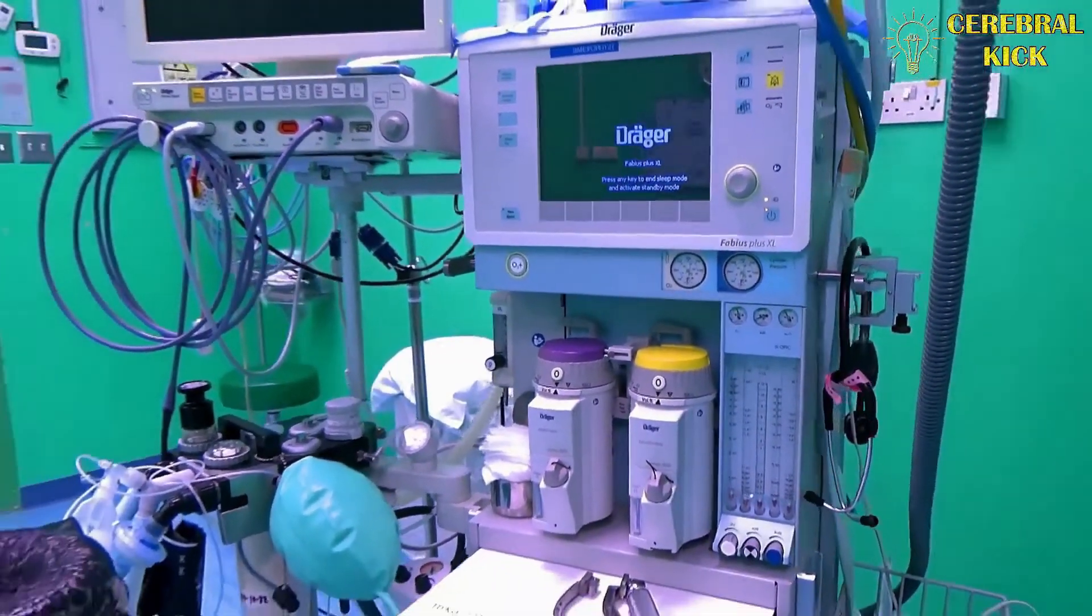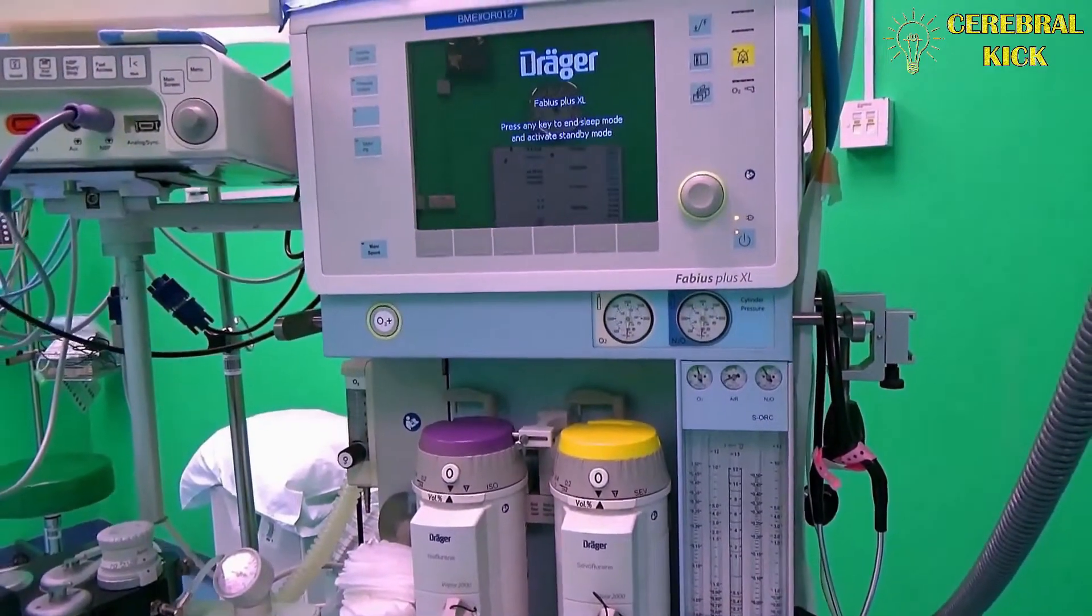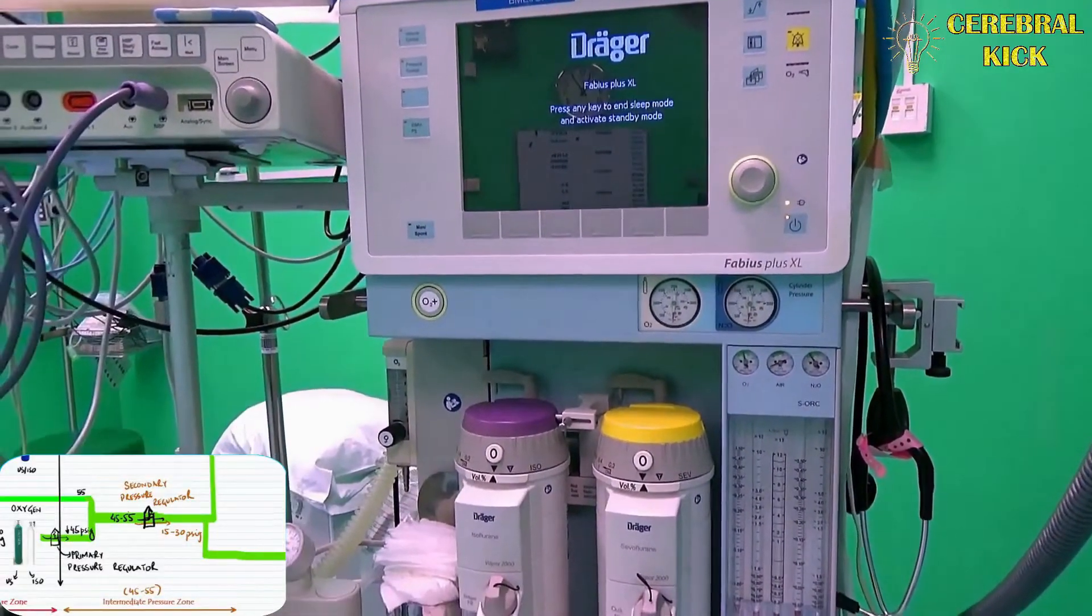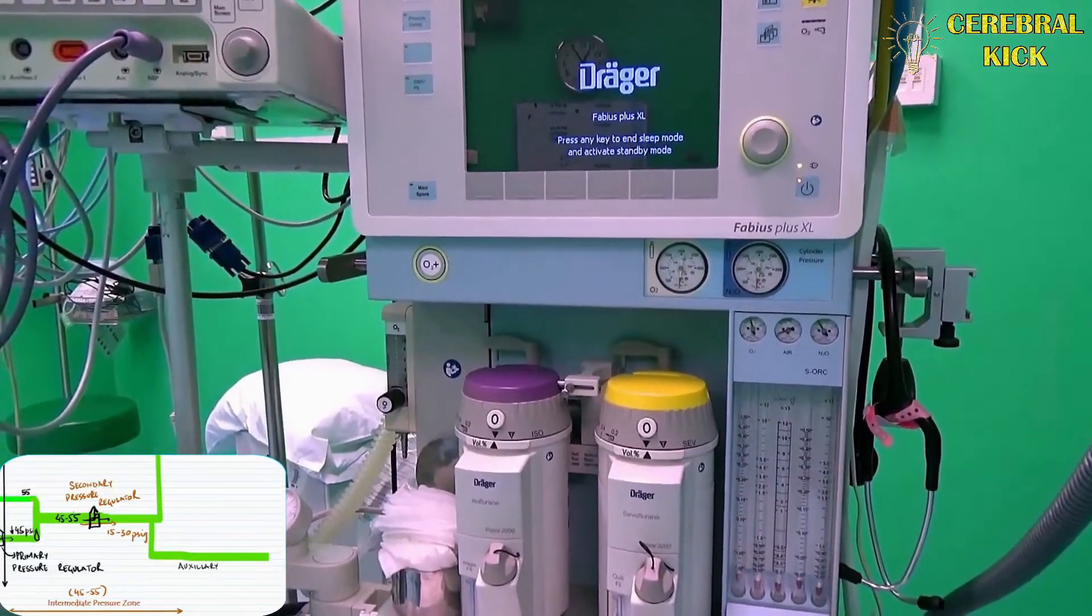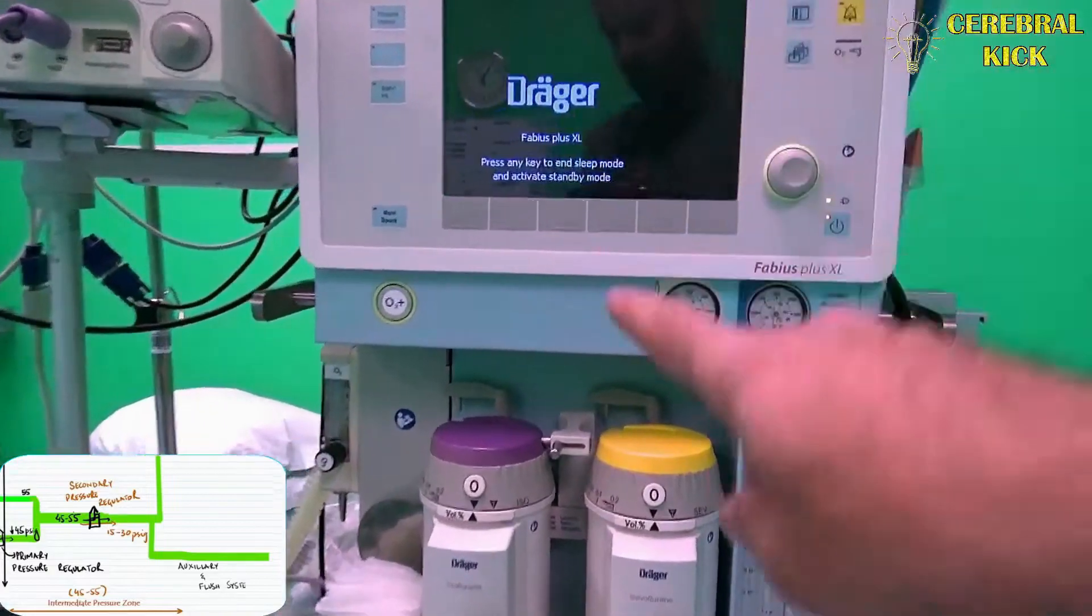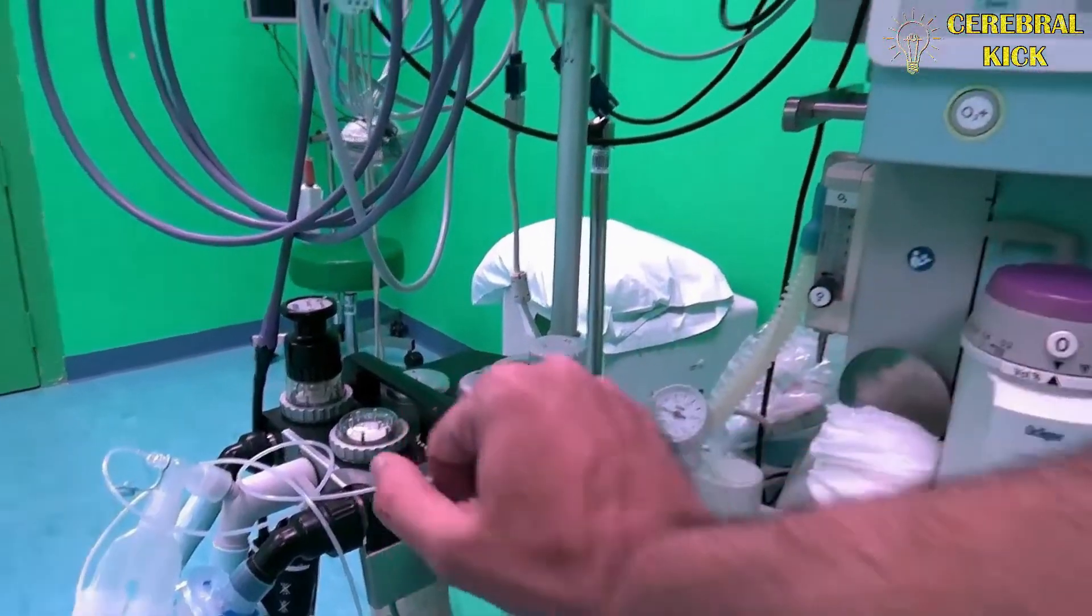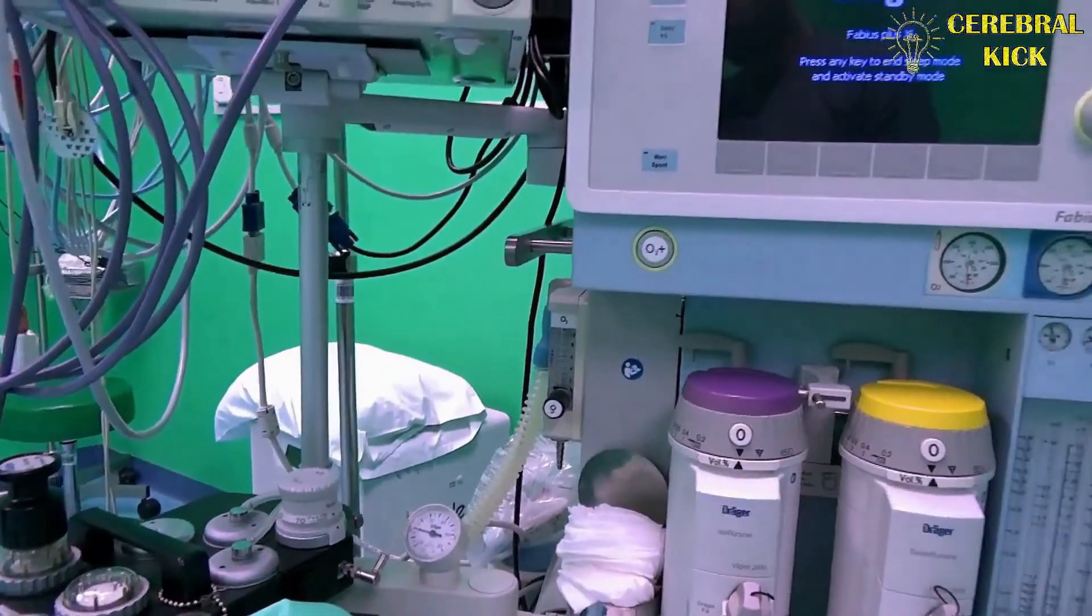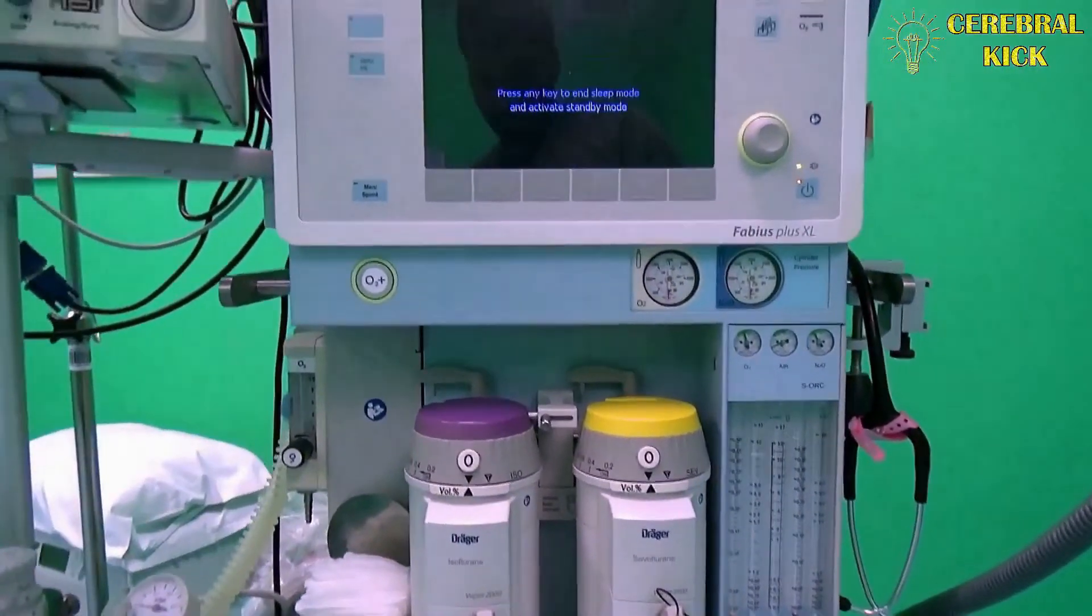We discussed that in the intermediate zone, the oxygen pipeline divides and it gives off a branch to auxiliary oxygen port and the oxygen flush, which bypass the low pressure zones and go straight to the breathing circuit here somewhere. There are those oxygen flush ports or the auxiliary oxygen ports - it's located right in the front.